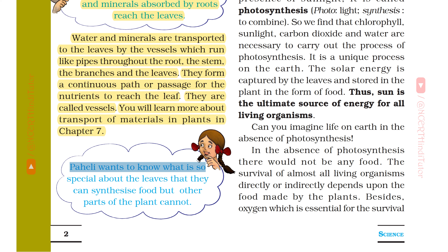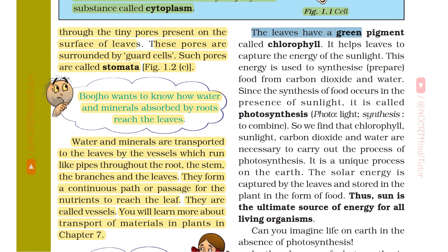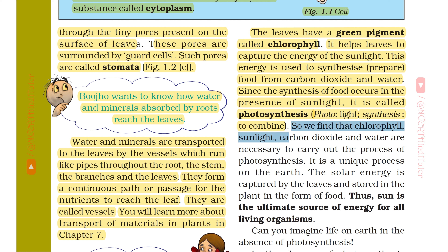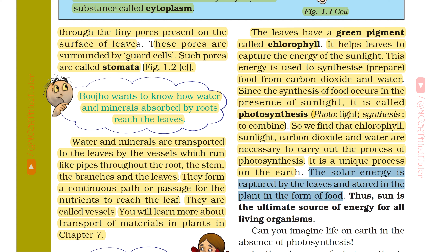Paheli wants to know what is so special about leaves that they can synthesize food but other parts of the plant cannot. The leaves have a green pigment called chlorophyll. It helps leaves to capture the energy of the sunlight. This energy is used to synthesize, i.e., prepare food from carbon dioxide and water. Since the synthesis of food occurs in the presence of sunlight, it is called photosynthesis. Photo means light and synthesis means to combine. So chlorophyll, sunlight, carbon dioxide and water are necessary to carry out the process of photosynthesis. It is a unique process on the earth. The solar energy is captured by the leaves and stored in the plant in the form of food. Thus, the sun is the ultimate source of energy for all living organisms.